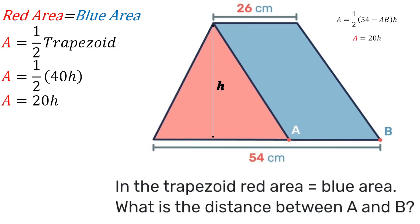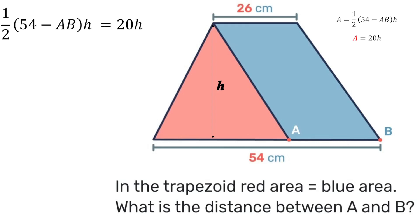So if the area of the triangle is half times 54 minus AB times h, which is also 20h, then we can equate those to each other. So now we have an equation to find AB.